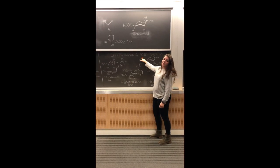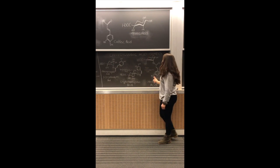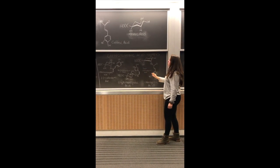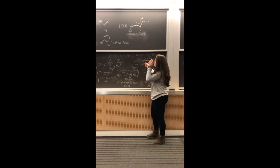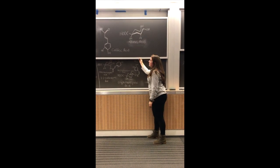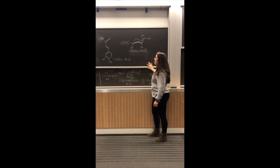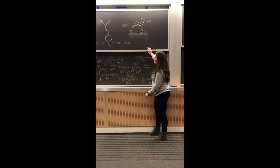Today, we will be talking about caffeoylquinic acids. More specifically, we'll be discussing chlorogenic acids, which is the 5-O-caffeoylquinic acid isomer. Now, caffeoylquinic acid is composed of caffeic acid and quinic acid combined to form these three isomers.